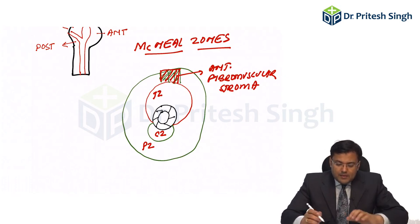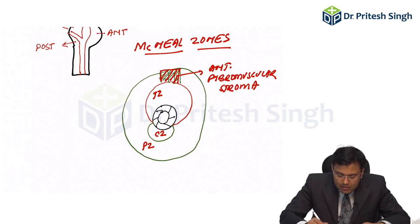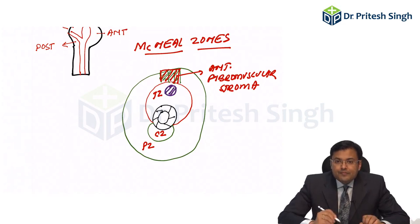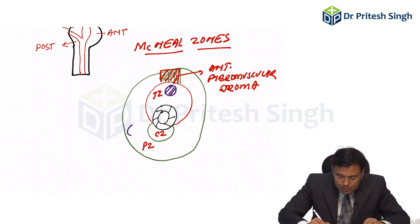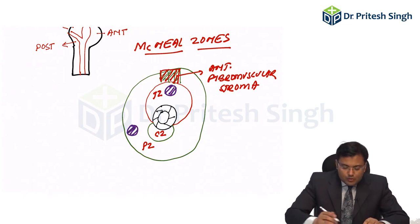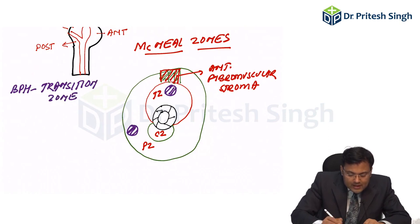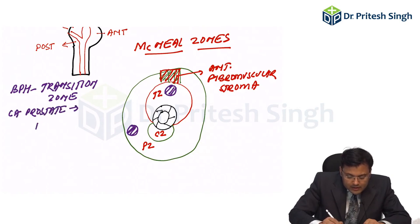Questions are asked: BPH is most common in which zone? BPH is most common in the transition zone. Whereas carcinoma prostate is most common in which zone? The peripheral zone. So BPH is most common in the transition zone, whereas carcinoma prostate is most common in the peripheral zone.